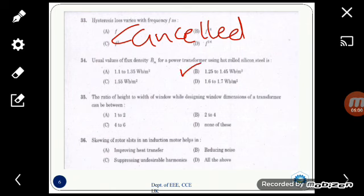Next one is: the ratio of height to width of a window while designing window dimension of a transformer can be between? Option B, 2 to 4. Height to width of window will be in the ratio 2 to 4.